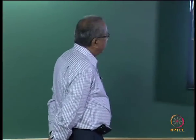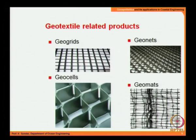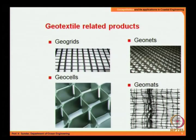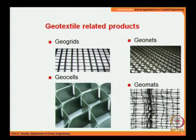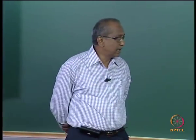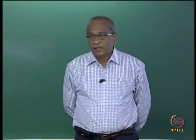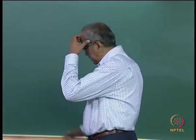Geotextile-related products include geogrids, geonets, geocells, and geomats. Geogrids are mostly used for reinforcing slopes. Geocells and geonets have similar roles but geogrids are stronger — if you want real control of slope sliding, geogrids are better. Geomats are adopted mostly when you want protection and also want to enable plantation over it.